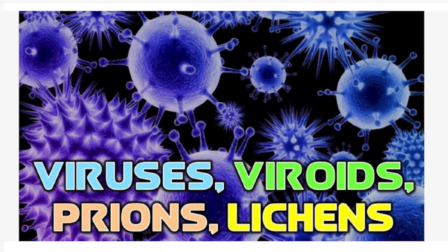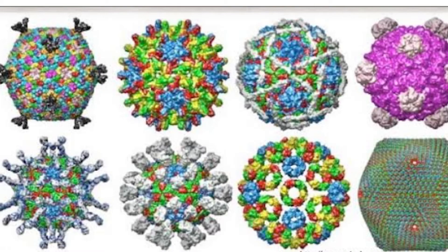We will learn more details about kingdom Animalia in the next lesson. Now we move to the next topic: viruses. Viruses and viroids are groups of acellular organisms and are not included in the five kingdoms of Whittaker's classification. This is because they show properties of both living and non-living things. Inside a host body they are active and living, but outside the body they are non-living. That is why they are not included in the five kingdoms.